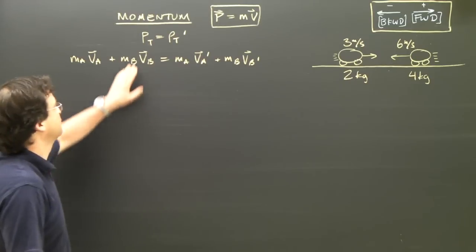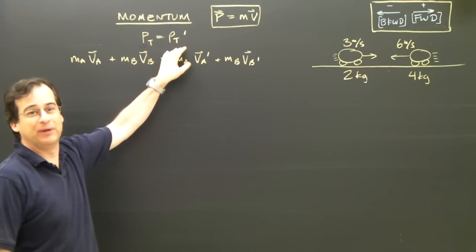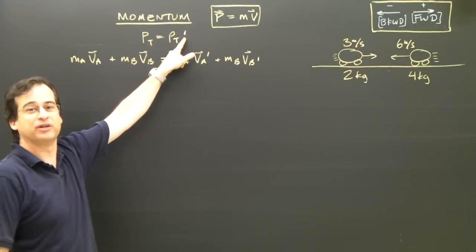With conservation of momentum, we say that all the momentum before is equal to all the momentum afterwards. That's what this little symbol here means, afterwards.